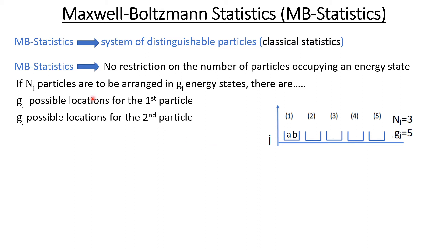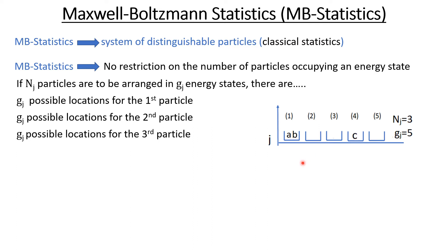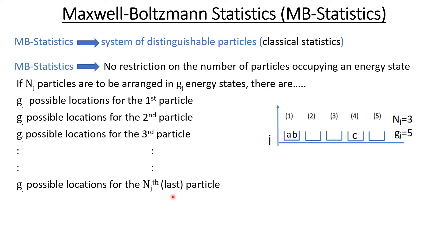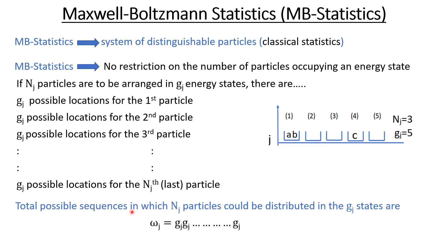This is allowed by the Maxwell-Boltzmann statistic because there is no restriction on the number of particles occupying an energy state. Similarly, for the third particle again I have G_j possible locations. So there will be G_j possible locations for the last particle as well. Therefore, the total possible sequences in which N_j particles could be distributed in G_j energy states would be the product G_j^(N_j).